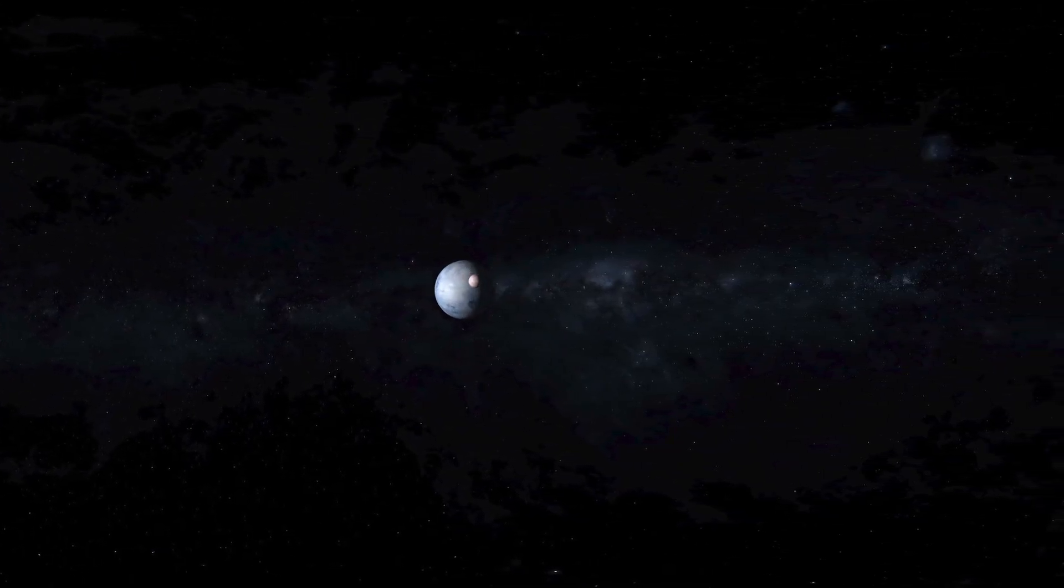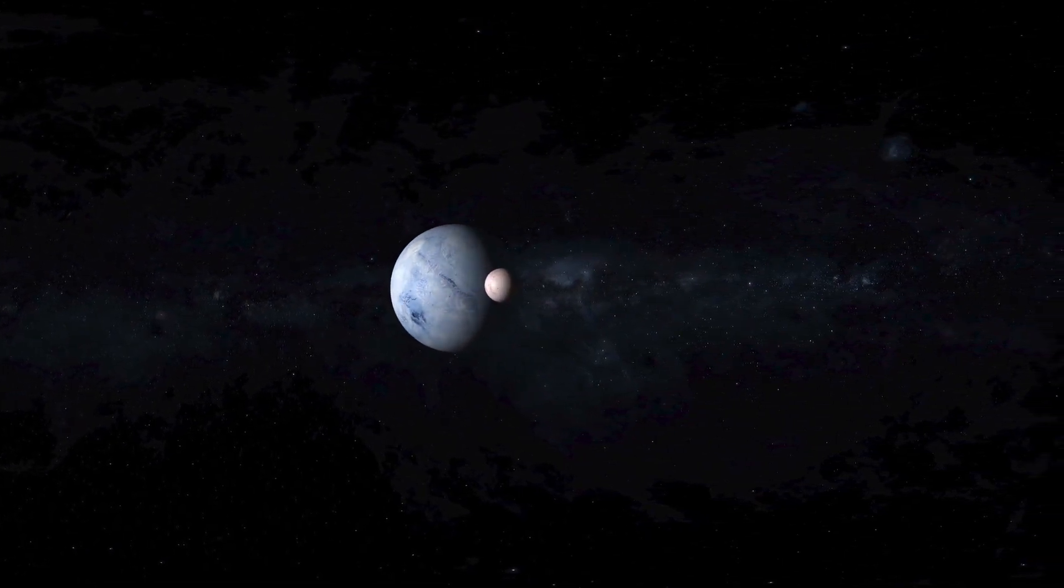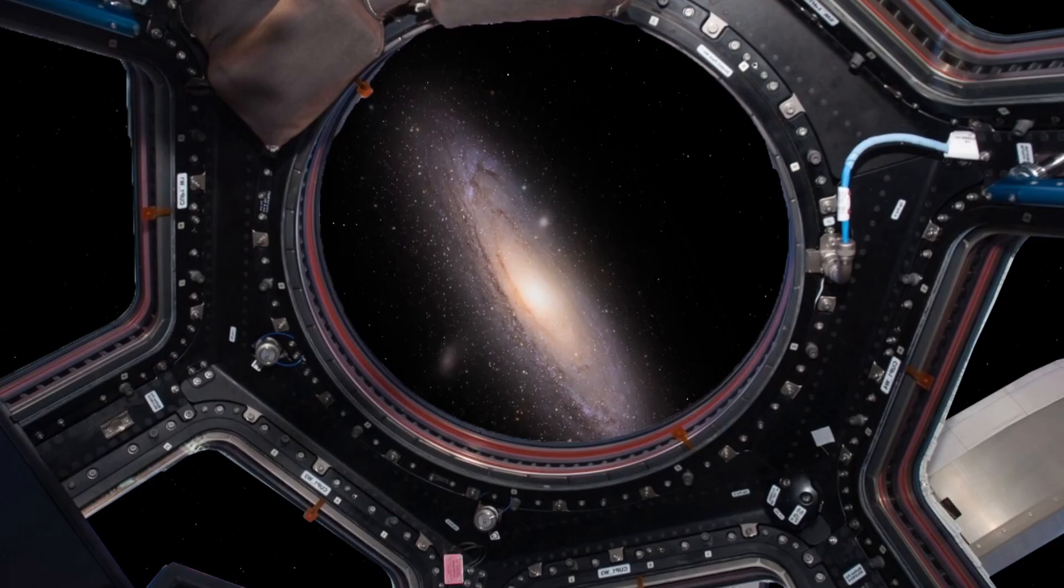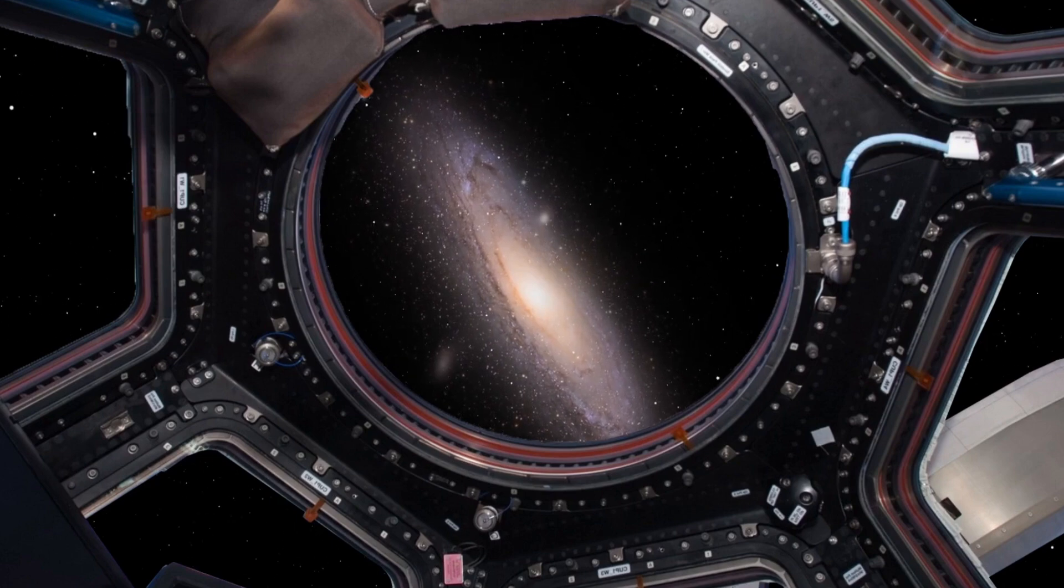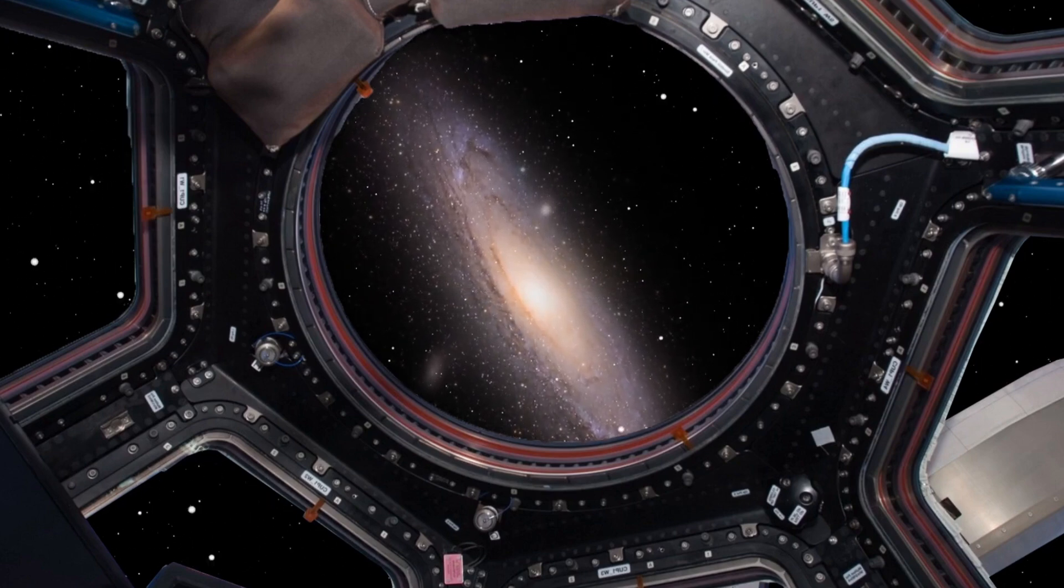At Neptune, 4.5 billion kilometers away, sunlight takes over 4 hours to arrive. But our journey doesn't stop there. Beyond Neptune lies the Kuiper belt, and further still, the Oort cloud.